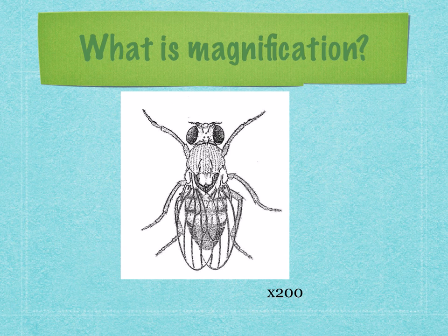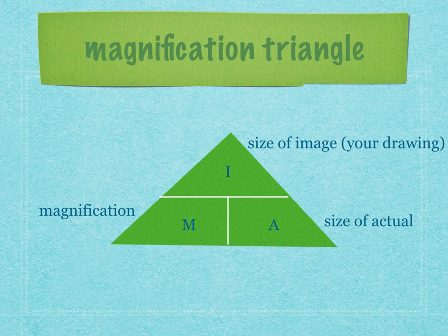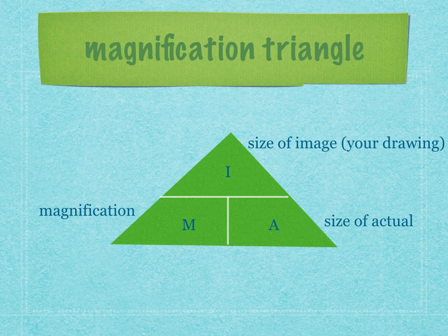So, let's have a look at equations. The first thing I want you to do is copy down this triangle in your notes because we're going to be using it for the rest of the lesson. Notice how I, which is the size of your image, is on top — a way to remember it is: I'm standing on top of the triangle. Then you've got magnification and actual at the bottom of the triangle.